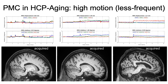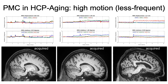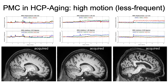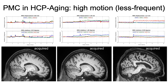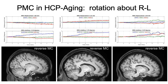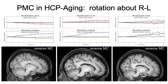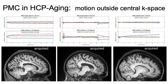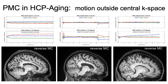Here are some examples with less frequent motion where the acquired images have good quality. The first example shows some brief periods of movement; the second shows some drifting during the scan; and the last shows a change in position before the center of k-space, which causes substantial blurring in the reverse motion corrected image. Examples with rotation about the right-left axis also show substantial blurring in the reverse motion corrected images, while the acquired images have good quality. In some cases significant motion occurred outside the center of k-space and therefore had little effect on image quality.